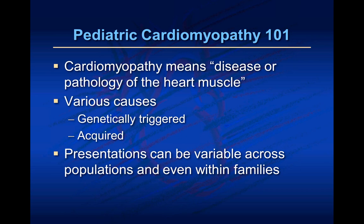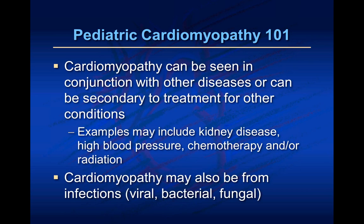Cardiomyopathy is very heterogeneous — even within a specific type, the way patients present can be very different, even within the same family. Cardiomyopathy can occur in conjunction with other diseases or secondary to treatment of chronic conditions. For example, patients may have kidney disease requiring a transplant, or high blood pressure leading to heart muscle disease. A common thing we deal with is exposure to chemotherapeutics, which can result in heart muscle disease as well.